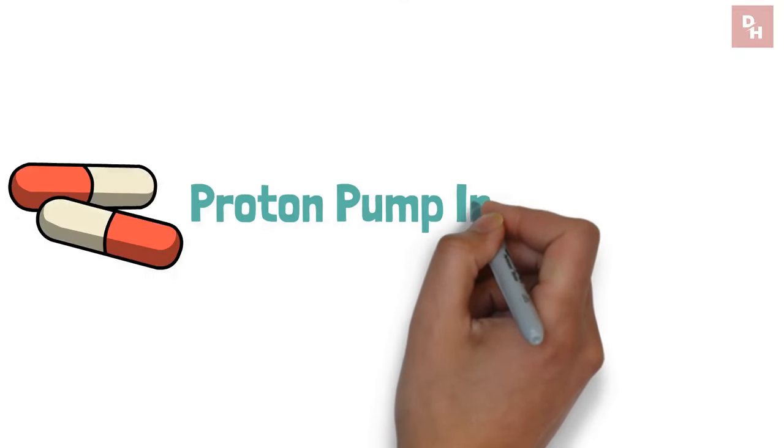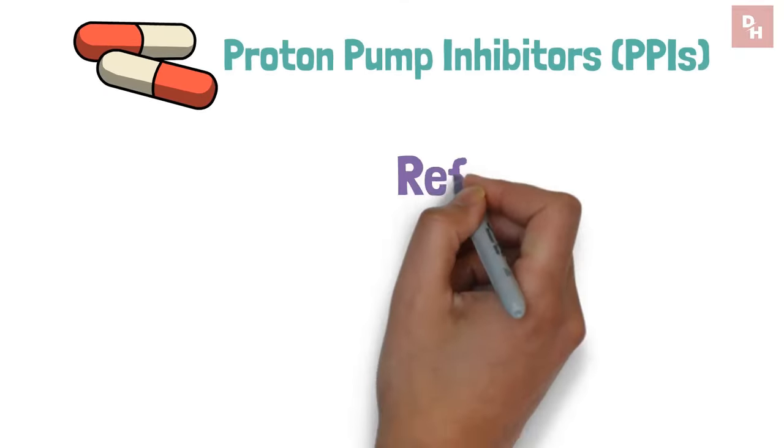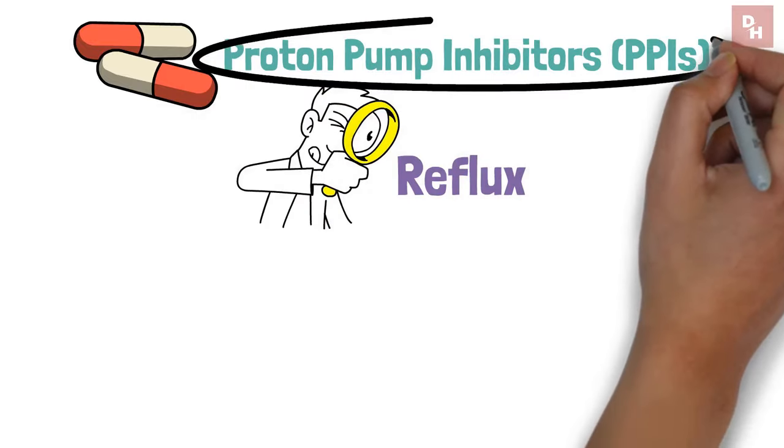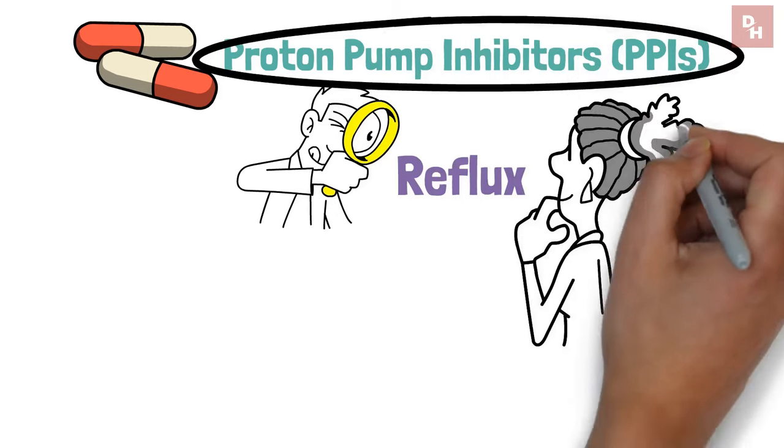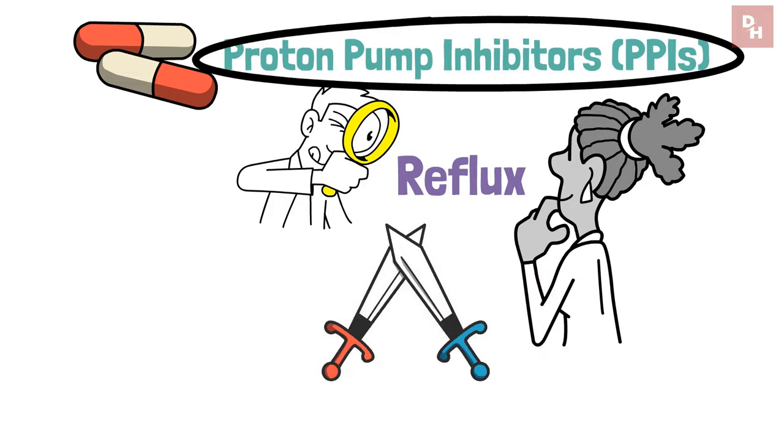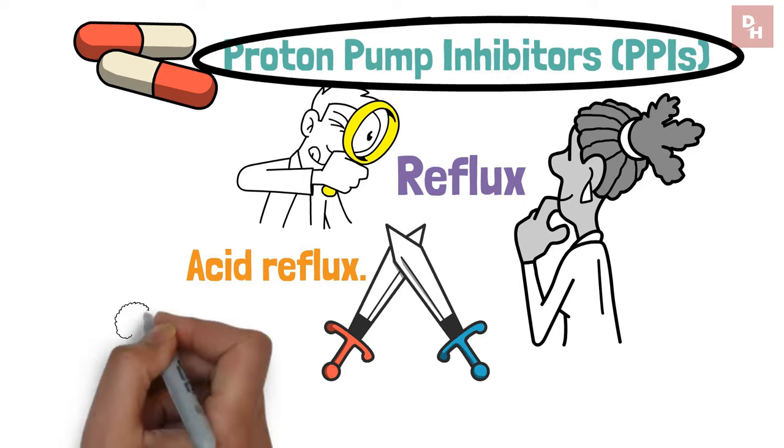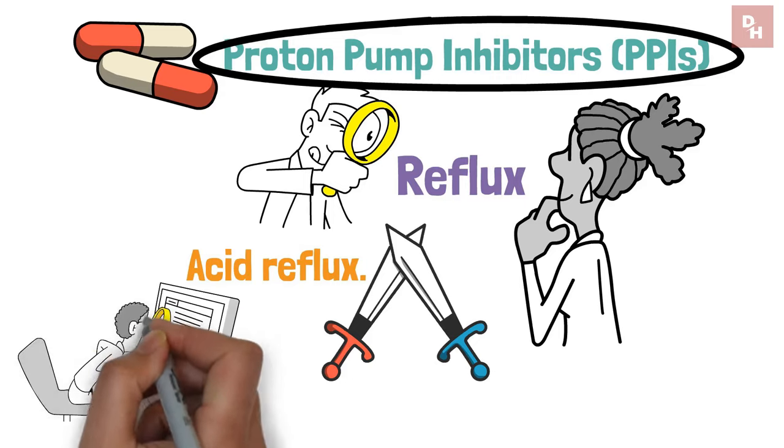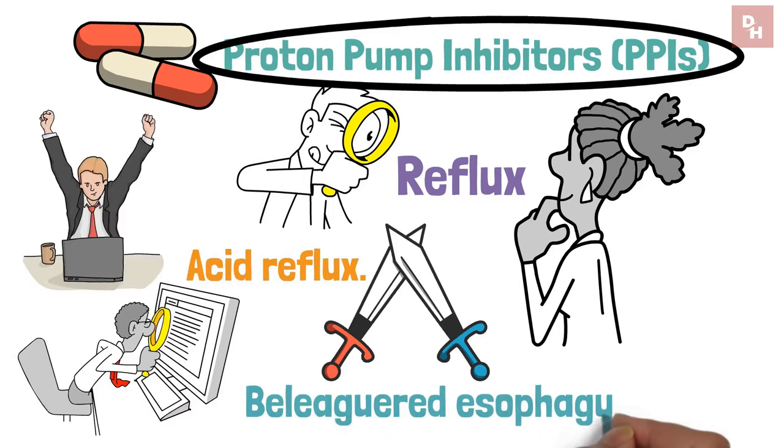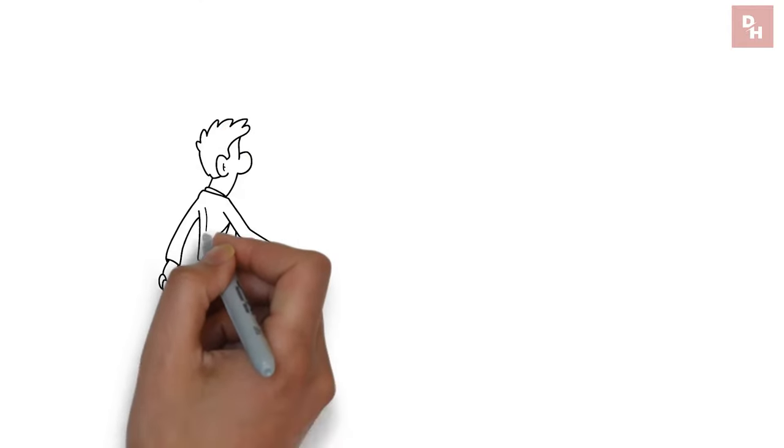Pill 9, Proton Pump Inhibitors. Relief from Reflux with a Watchful Eye. Ah, proton pump inhibitors, or PPIs as we've come to know them, have been nothing short of a godsend for those of us battling the fiery dragon that is acid reflux. They swoop in, dial down the acid production, and provide much-needed relief to our beleaguered esophagus.